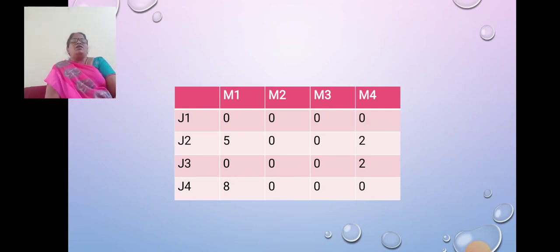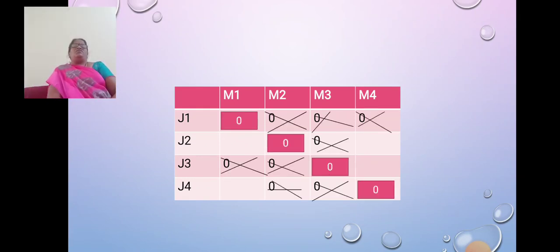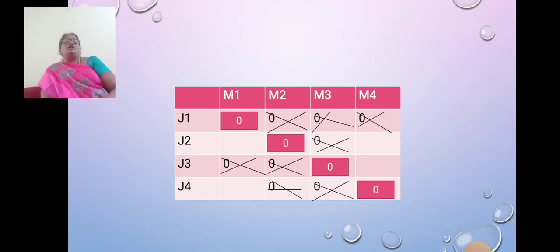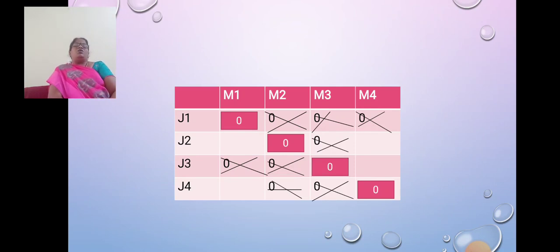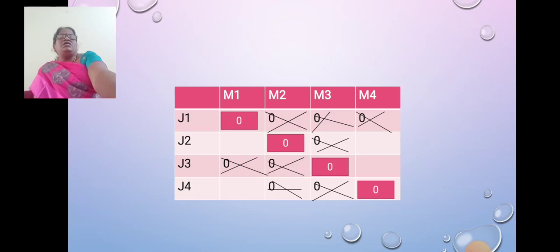Now we have a number of zeros. We move to allocation. If we allocate M1 and J1 with 0 and select it, the opposite zeros are struck out. In J2 and M2, there is a 0 — opposite zeros strikeout. In M3 and J3, there is a 0 — opposite zeros strikeout. In J4 and M4, there is a 0 — opposite zeros strikeout. From the original matrix: M1-J1 value is 5, M2-J2 value is 5, M3-J3 value is 10, M4-J4 value is 3.